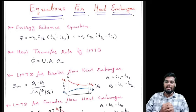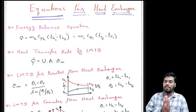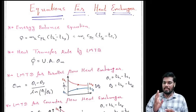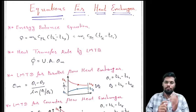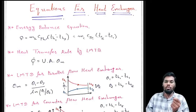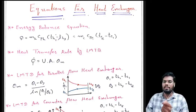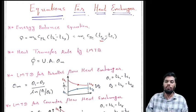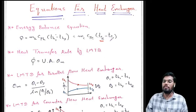Hello friends, myself Professor Pat Thakkar. Today we are going to learn how to solve numericals based on the LMTD method for a counter flow heat exchanger. We only need three equations. Our first equation is the energy balance equation: Q = m·C·ΔT. For hot fluid: Q = MH·CPH·(TH1 - TH2), since TH1 is always greater than TH2. For cold fluid: Q = MC·CPC·(TC2 - TC1), since TC2, the outlet temperature of cold fluid, is higher than the inlet temperature TC1.